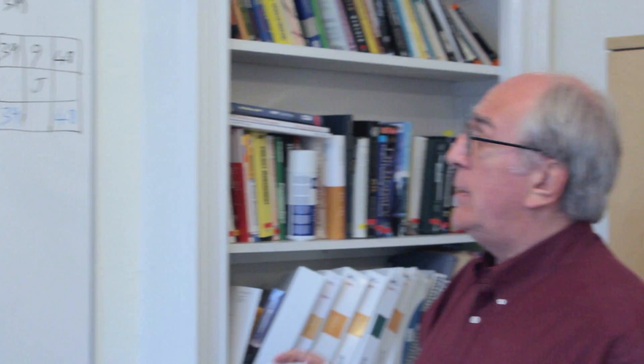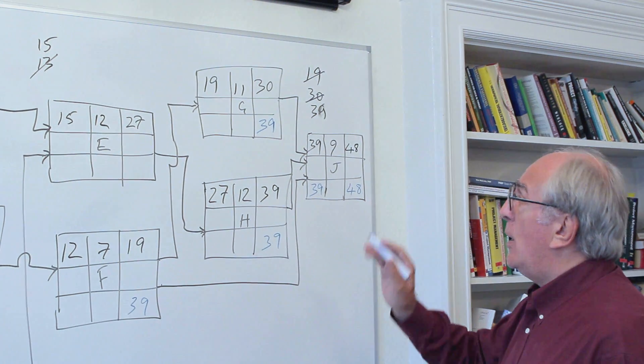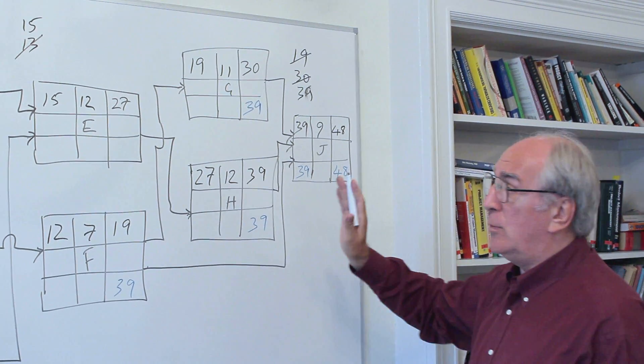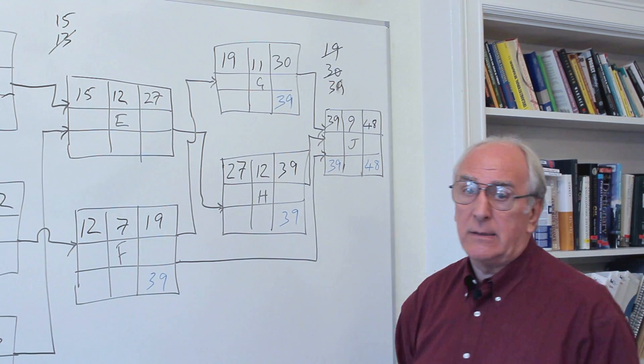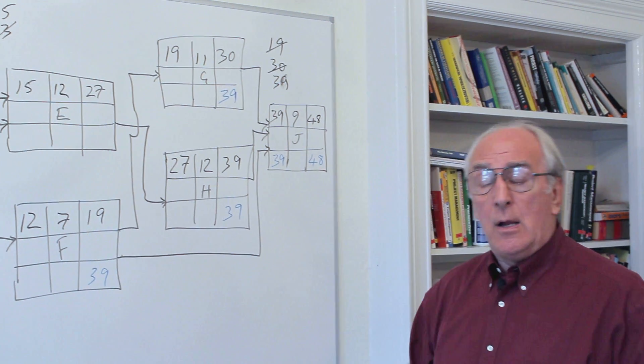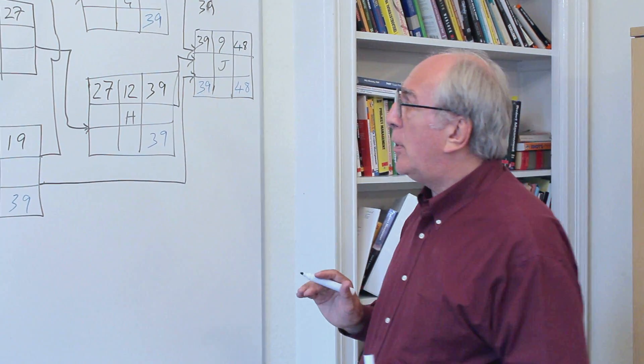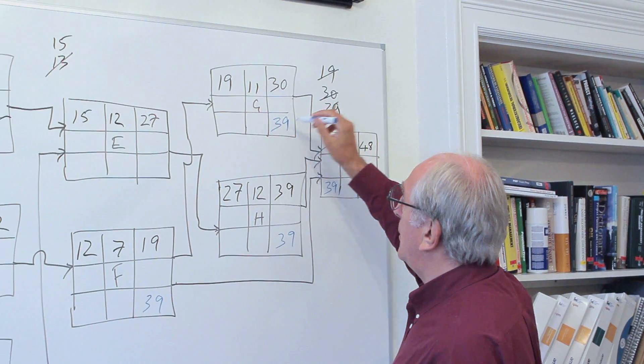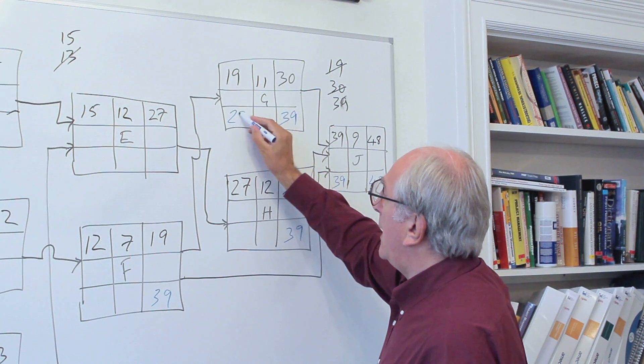We'll look at activity G and say, well, what's the latest time we can start G without affecting the end date of the project? And that's a key assumption. We're now looking at the latest start and latest finishes of these activities to do that without affecting the end time of the project. That's where we're at. So we can subtract the duration from 39, which is 39 minus 11, giving us 28.